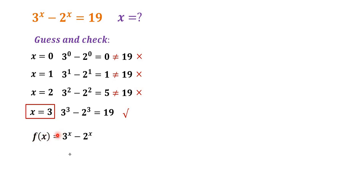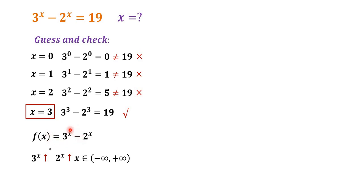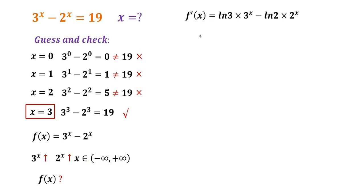We establish a function f(x) equal to 3 to the power of x minus 2 to the power of x. Both 3 to the power of x and 2 to the power of x increase over the range from negative infinity to positive infinity. Because of the minus sign, we have no idea how f(x) changes with x in this range, so we will need to look at the derivative of f(x). It is equal to ln(3) times 3 to the power of x minus ln(2) times 2 to the power of x.